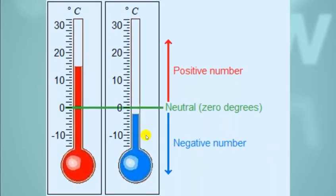Here in the blue thermometer, you can see that as you have 0 and you move below 0, you get minus 1, then you get minus 2, you get minus 3. Basically you are counting in the opposite direction. As you are moving towards negativity, you are counting negatively. You can see the temperature is minus 1, minus 2, and here minus 3.